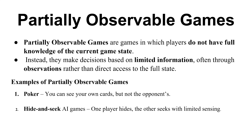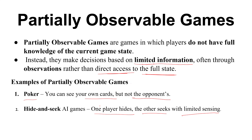Now coming to Partially Observable Games. In these games, players do not have full knowledge of the current game state — they can only partially observe it. Instead, they make decisions based on limited information. In the previous case, randomness determined the next state. Here, the available information is limited — decisions are made through observation rather than direct access to the full state. For example in Poker, you can see your own cards but not your opponents' cards. Hide and Seek is also an example — one player hides and the other seeks with limited information, not full knowledge.